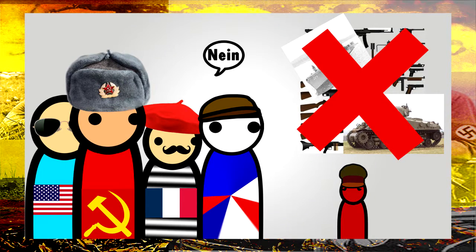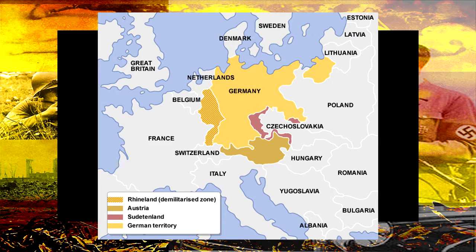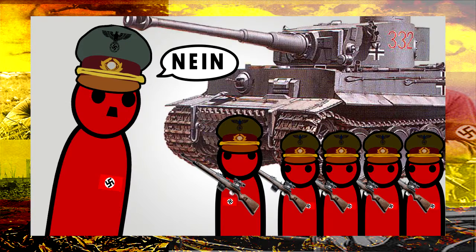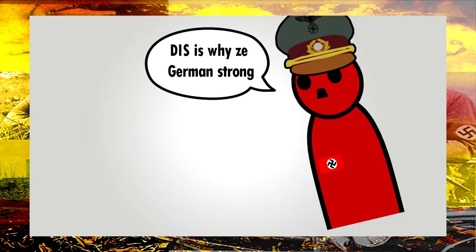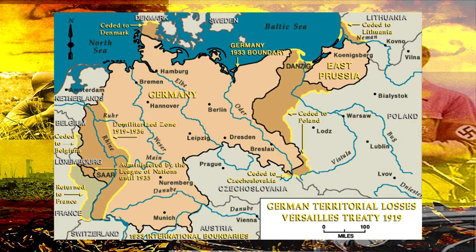Disarmament meant Germany was only allowed to have a small army and six naval ships — no tanks, no air force, no submarines were allowed. The Rhineland area was to be demilitarized, though this part of the agreement was later broken by Hitler, who started rebuilding the military force in Germany when he came to power. The Territorial Clause meant land was taken away from Germany and given to other countries.